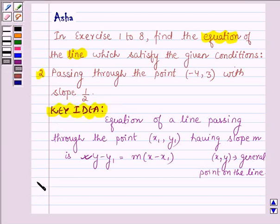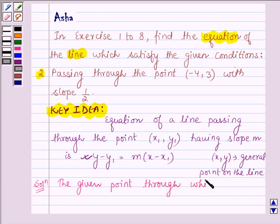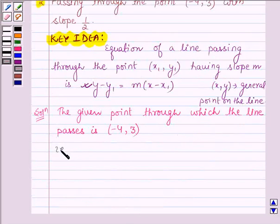Let us now begin with the solution. Here the given point through which the line passes is (-4, 3), that is x1 equals -4 and y1 equals 3.